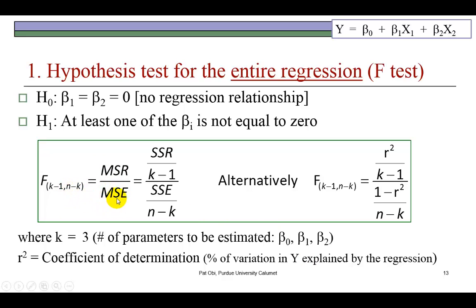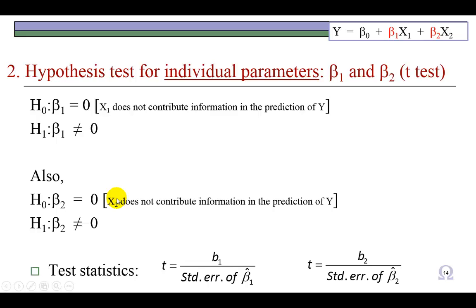The second hypothesis test is for the individual parameters in the regression model. So we're going to separately test for the significance of β₁ and β₂. Remember, β₁ is the measure of impact that X₁ has on Y, holding X₂ constant. β₂ will capture how much information X₂ contributes in the prediction of Y, holding X₁ constant.